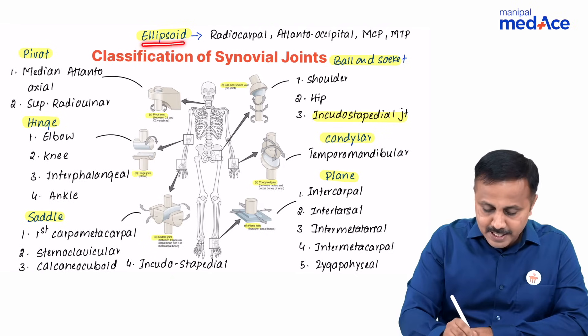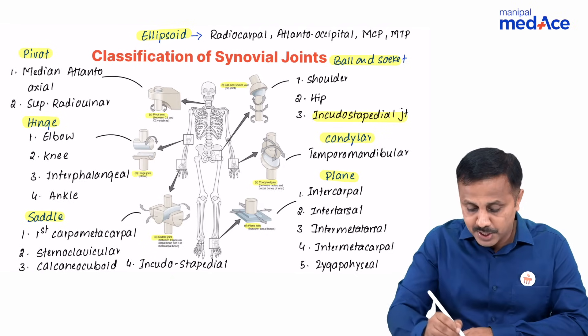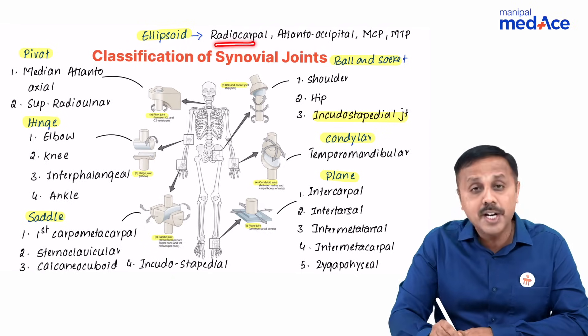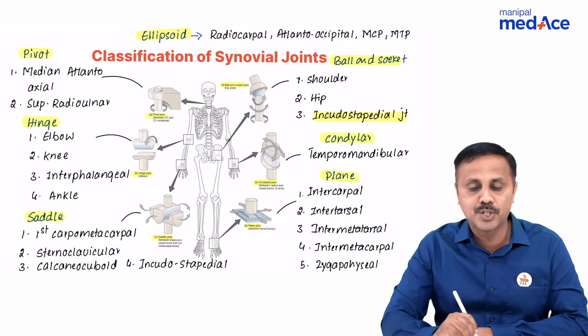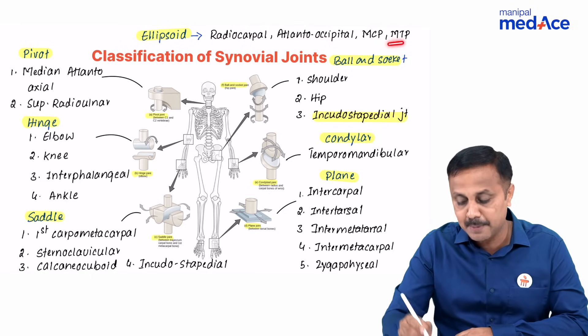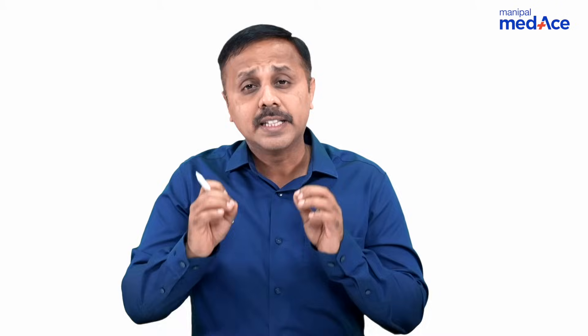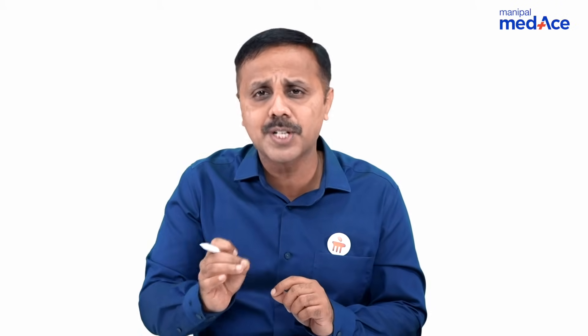Lastly, the examples for the ellipsoid joint include the wrist joint or the radiocarpal joint, the atlanto-occipital joint, and the metacarpophalangeal and metatarsophalangeal joints. The classification of synovial joints and its examples are a must-know fact for your entrance exam.